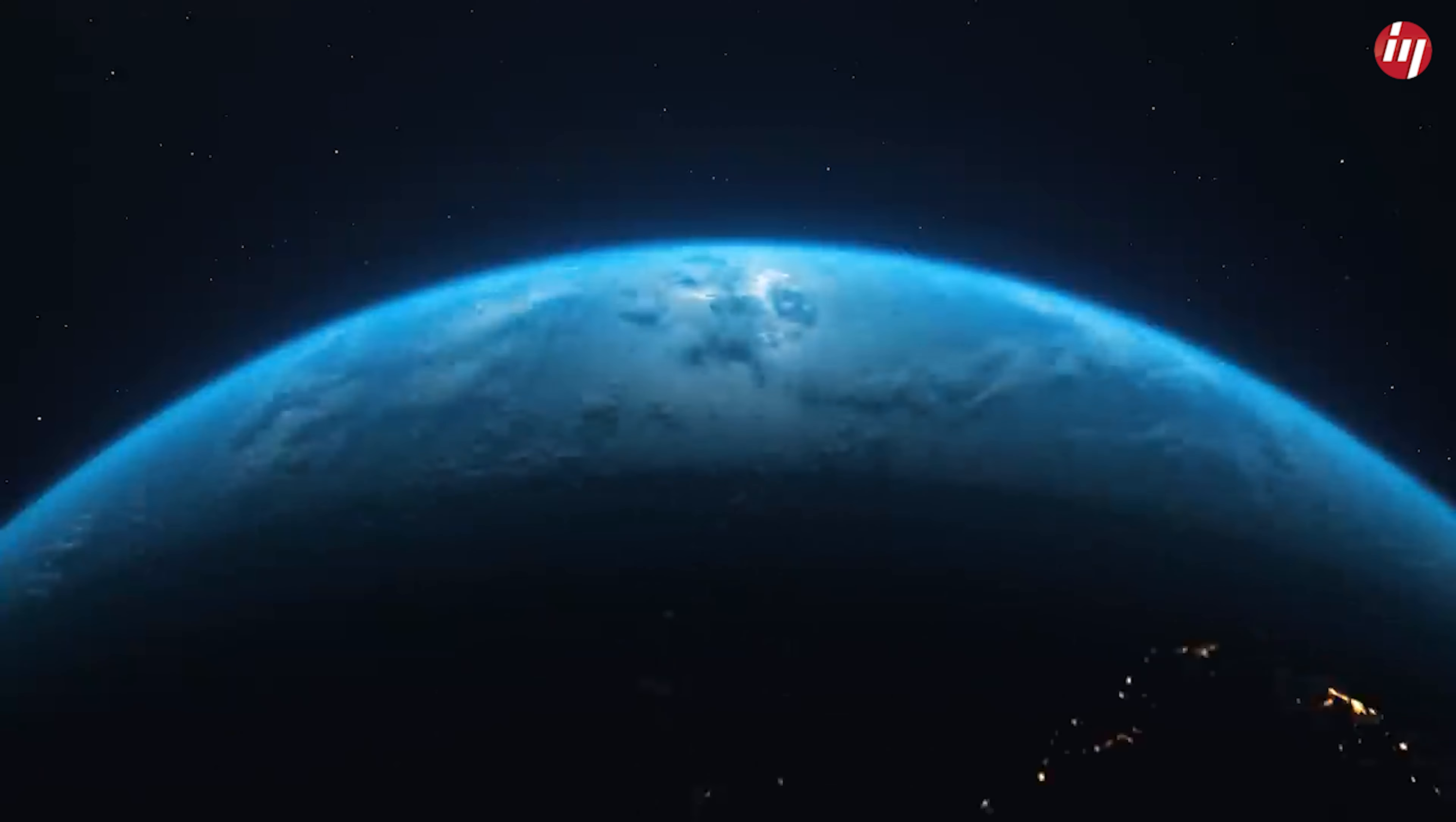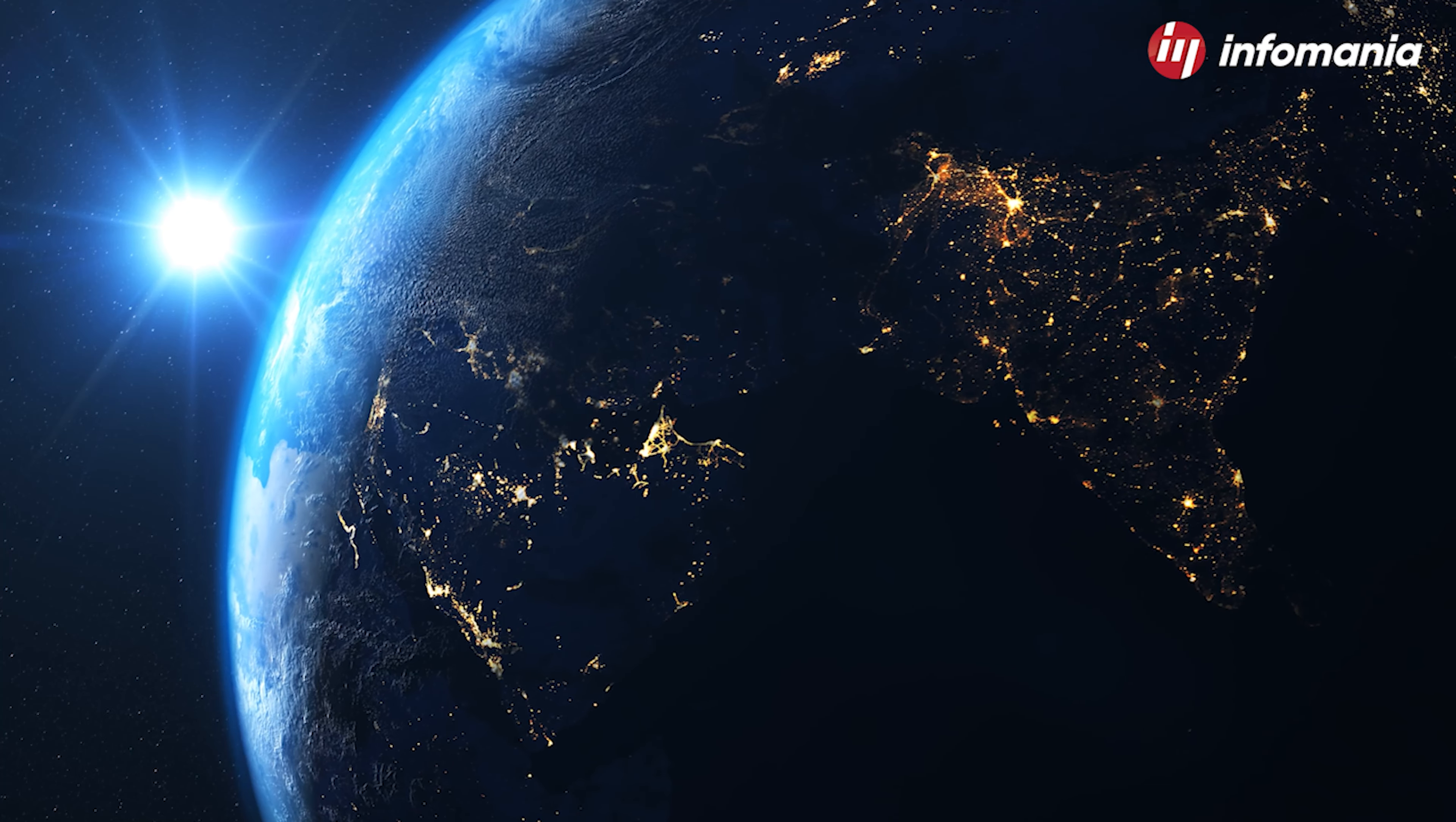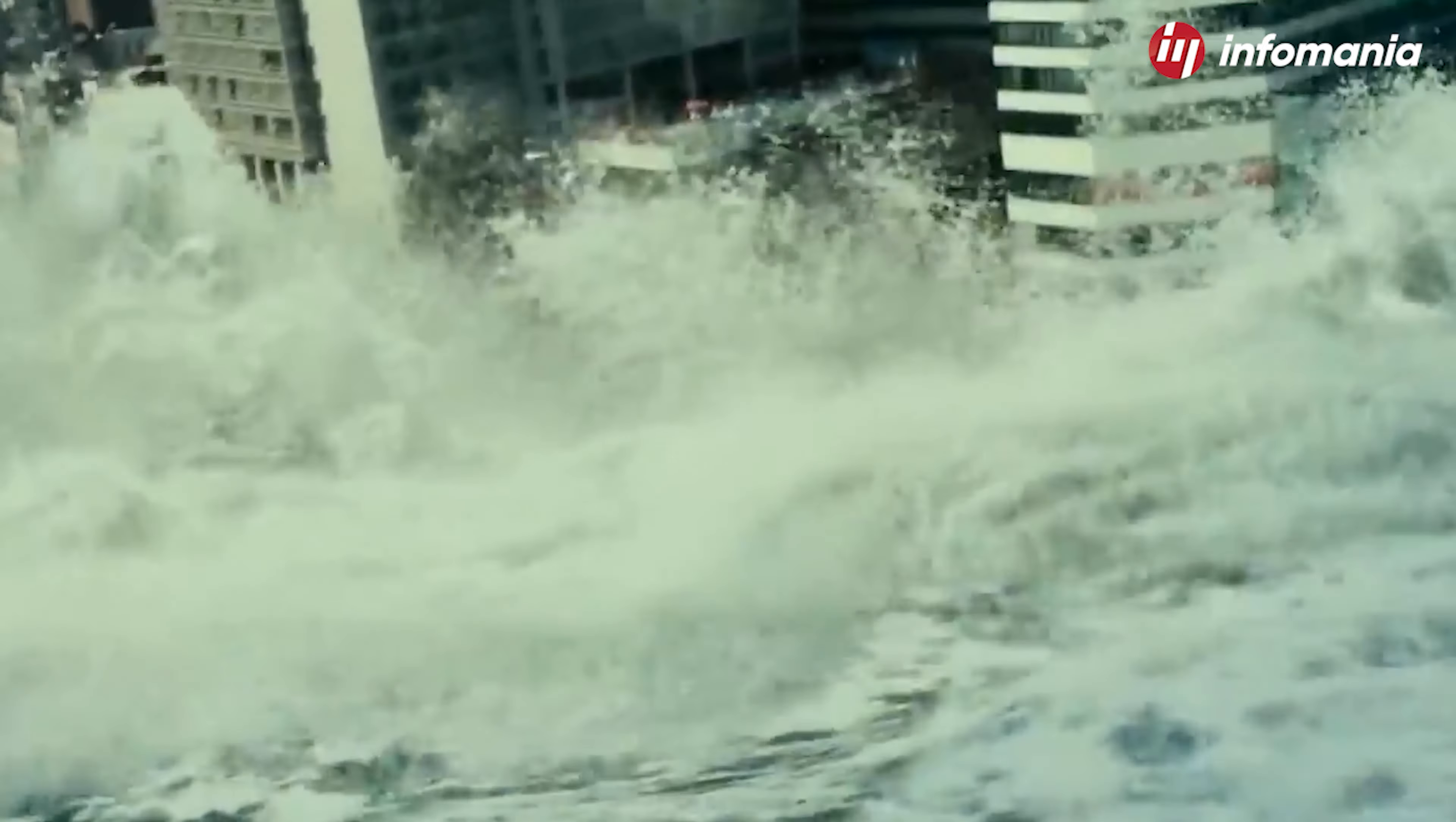So what would happen if these rotations that are so vital for us were to suddenly stop? The answer is destruction and catastrophes. We know that the rotation of the earth is gradually slowing down, but if the earth suddenly stops spinning, it would be enormously catastrophic for much of the planet's surface, and it can become very inhospitable.